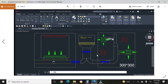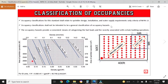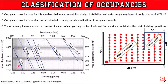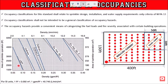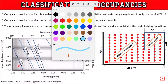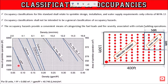Assalamu alaikum. Today's topic is classification of occupancy as per NFPA 13. Classification of occupancy is among the sprinkler installation design and water supply requirements. So stay with me and watch my channel. Please subscribe to my channel. Today's discussion is the classification of occupancy.